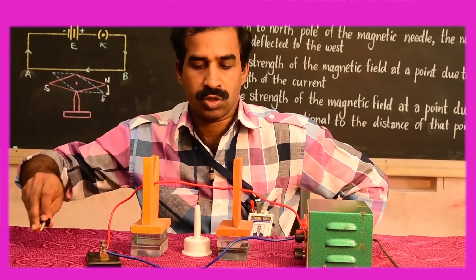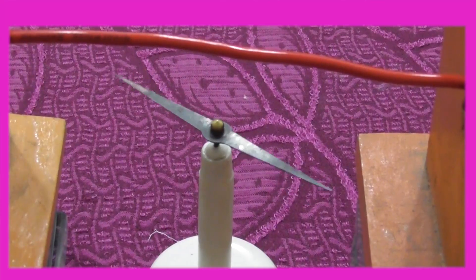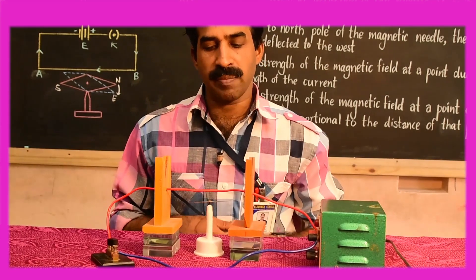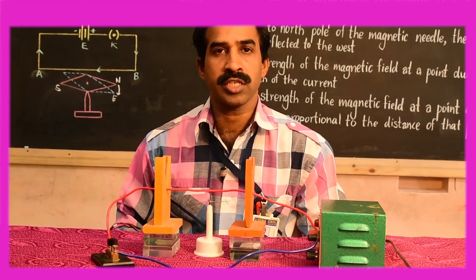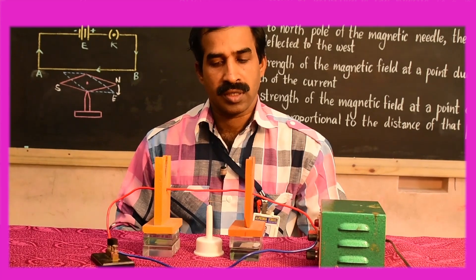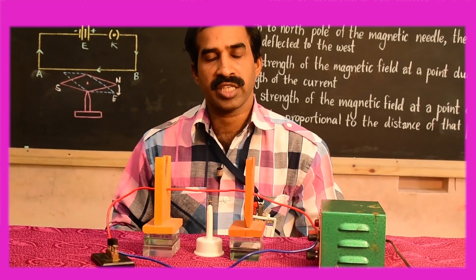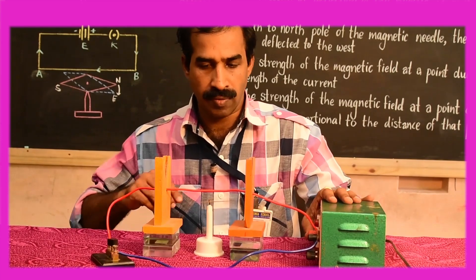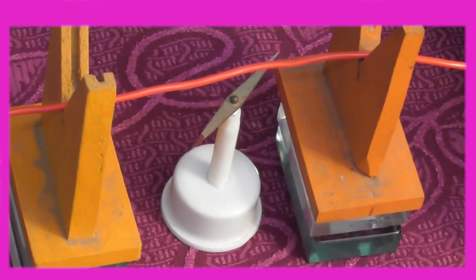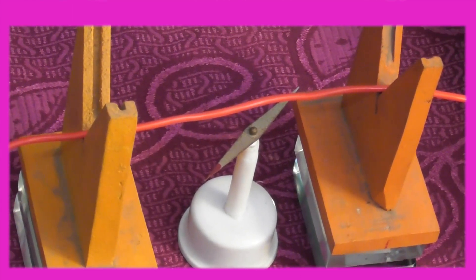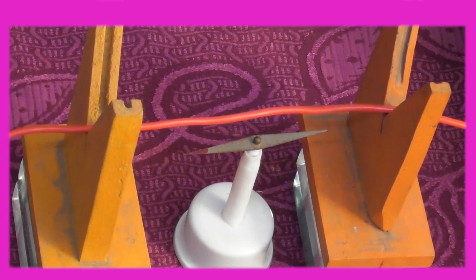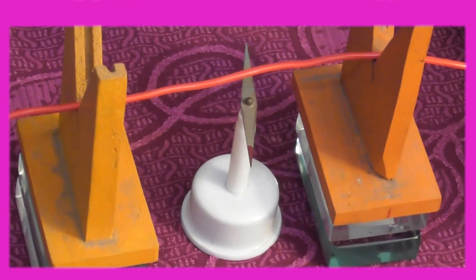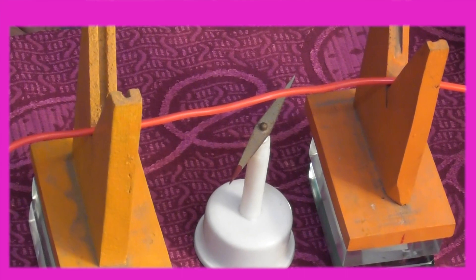The magnetic needle returns to its original position and aligns itself in the north-south direction. If the distance between the magnetic needle and the conductor is kept constant and the current is increased, then the angle of deflection of the needle increases. With less current the north pole gets deflected towards the west, but if I increase the current, you may check that the angle of deflection of the magnetic needle is more.